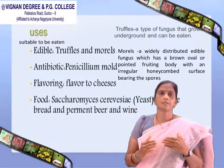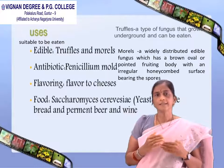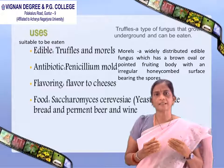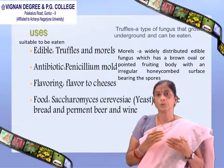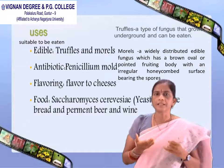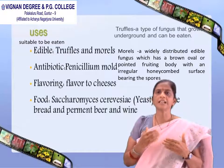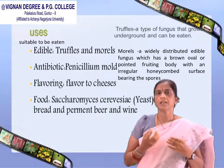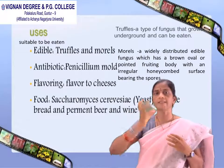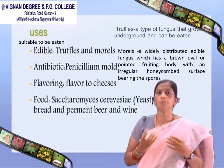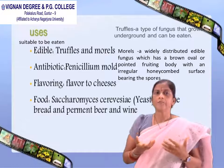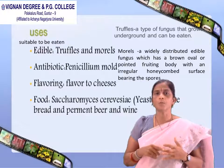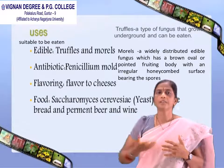Coming to the uses of fungi — fungi can be edible, meaning suitable to eat; examples are truffles, which grow underground and can be eaten. Morels are a widely distributed edible fungus with a brown oval or pointed fruiting body with an irregular honeycomb surface bearing spores. Some are antibiotic-producing fungi; example is Penicillium mold, which is an antibiotic-producing fungus.